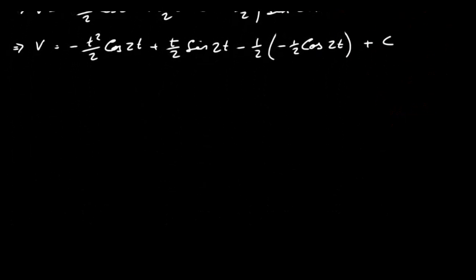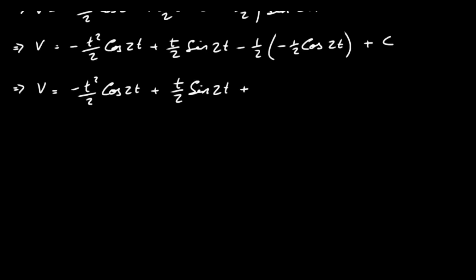Tidying up: v = -t²/2 · cos(2t) + t/2 · sin(2t) + ¼ cos(2t) + c. Now we need to find the constant of integration c.